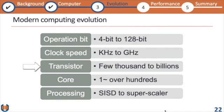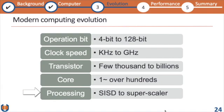The number of transistors in early computers was only a few thousand, but now each processor has billions of transistors. Similarly for cores — early modern computers had a single core, but recently that number has been increasing to sometimes more than one hundred in a single computer, and even a few thousand in supercomputers. In terms of processing, early computers handled a single instruction at a time sequentially with a single data stream, but now we have superscalar architectures that can operate on multiple data and multiple instructions simultaneously.